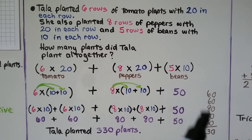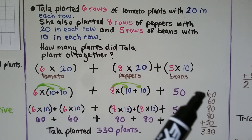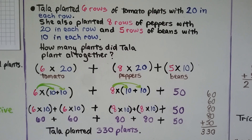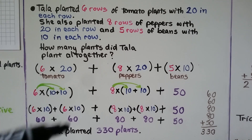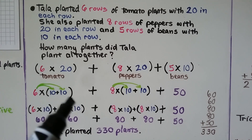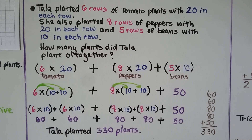We take all the addends and stack them on scratch paper: 60 plus 60 is 120. Adding 80 gives 200. Adding the other 80 and then 50 gives a total of 330. So Tala planted 330 plants. By breaking the word problem into three parts — tomatoes, peppers, and beans — we solved each piece and added them together. The distributive property says multiplying a sum by a number is the same as multiplying the addends by the number, so we can break up large factors and get the same product.